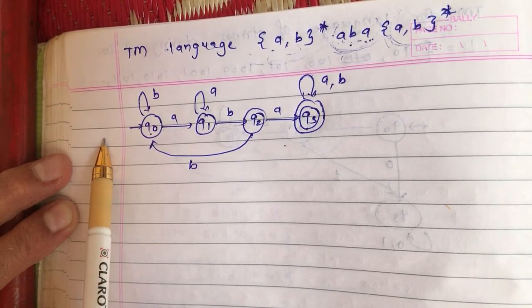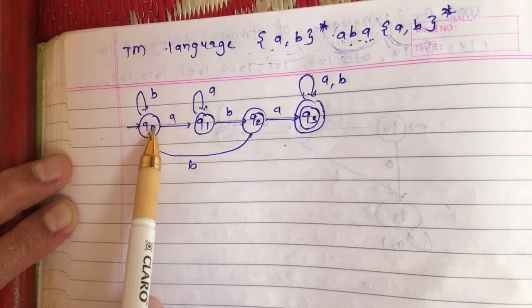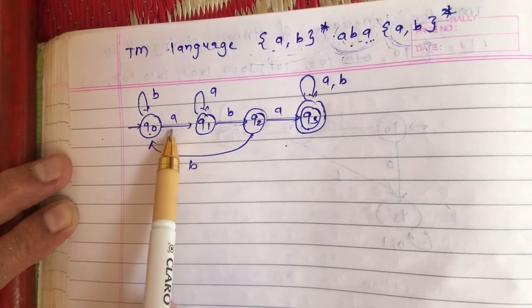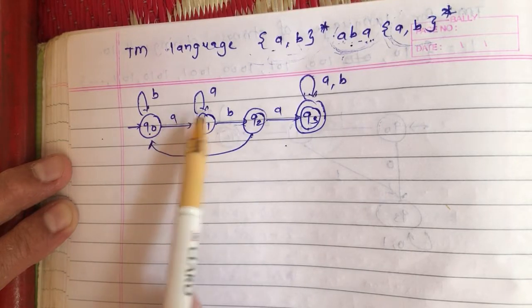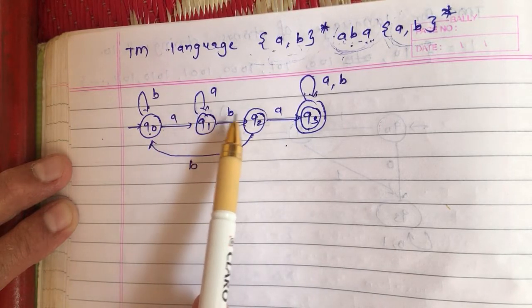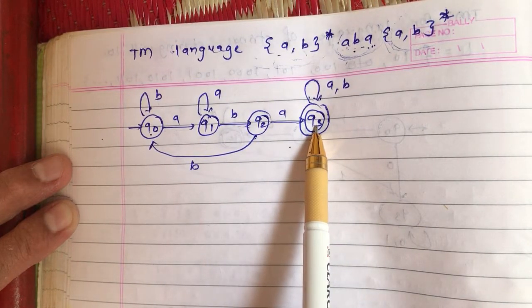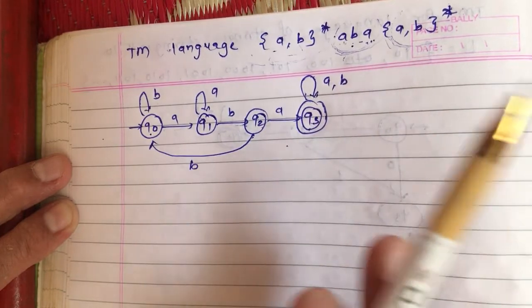First I need to process a blank, then I will process this b, a, this a, b, then this b and this a by keeping these symbols as it is and always keeping to move my head on the right hand side. Here I will enter into an accepting state that is ha.